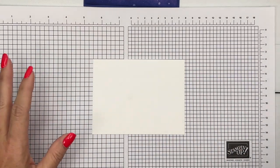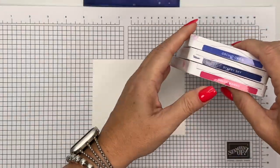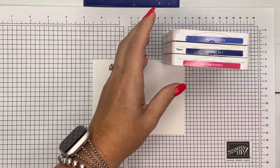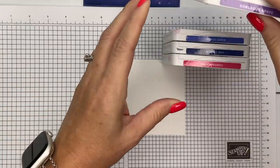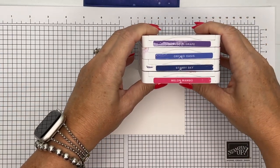I am going to use Melon Mambo, Orchid Oasis, Starry Sky, and I think I'm going to put a little bit of Gorgeous Grape as well. Look at that color scheme. Isn't that gorgeous?